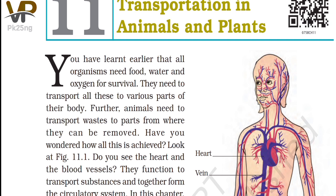We will see that the arteries carry oxygenated blood from one place to another place. But if we talk about veins, they carry carbon dioxide-containing blood from one part to another part, collecting blood from all body parts and pushing it towards the heart.